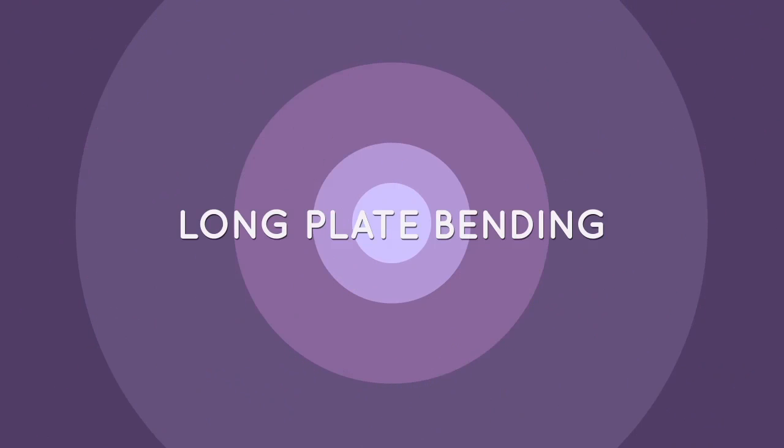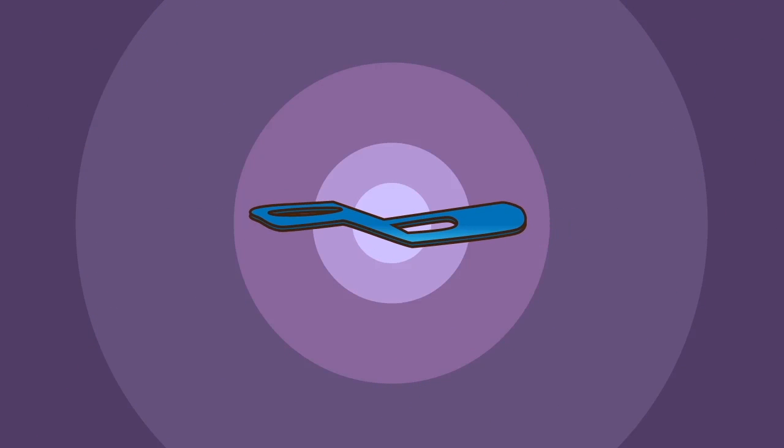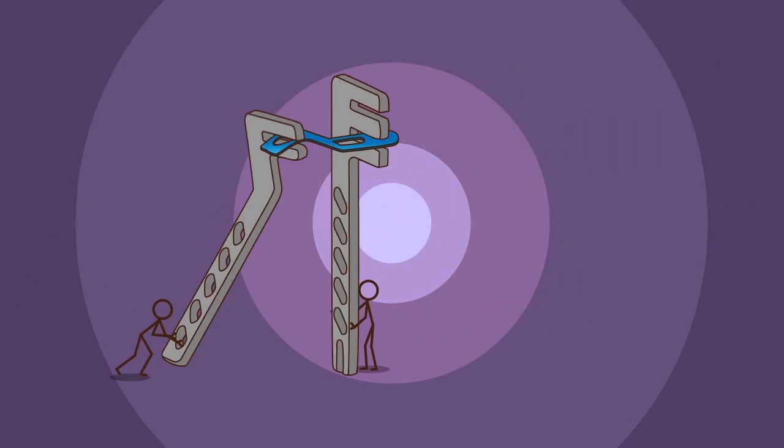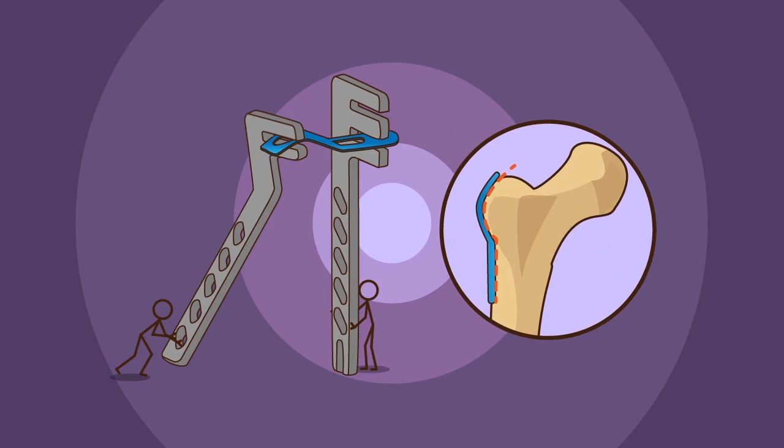Long plate bending: this step pertains only to the long plate. Using the two plate benders, bend the plate to conform to the femur's geometry. The long plate should not be excessively or repeatedly bent. The plate should not be reverse bent in the same location. Use care to ensure that the plate is not scratched or notched during the bending process.